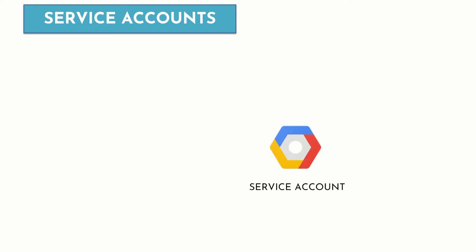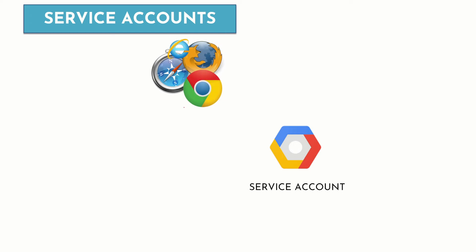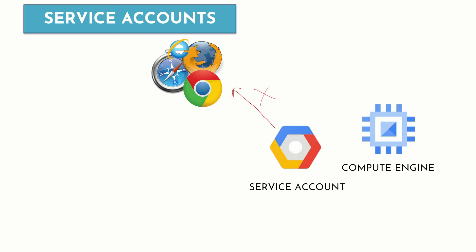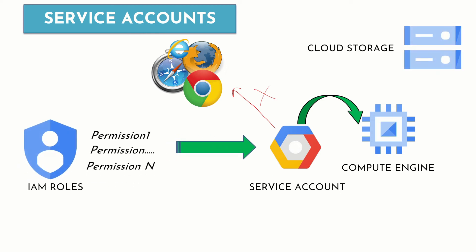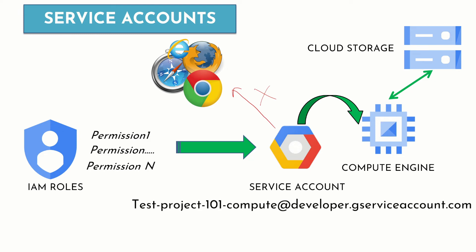Applications use service accounts to make authorized API calls. Service accounts do not have passwords and therefore cannot log in via browser or cookies. A service account can be attached to a Compute Engine VM so that an application running on that VM can authenticate as the service account. The service account can also be granted an IAM role that lets it access resources such as Cloud Storage. The service account is identified by its unique email address.